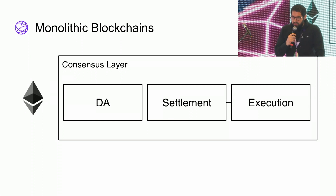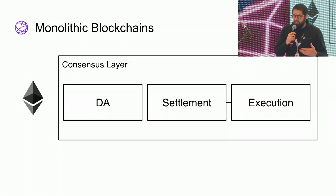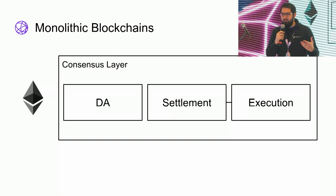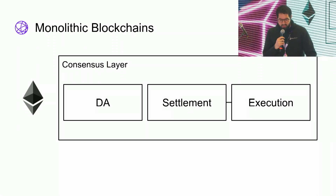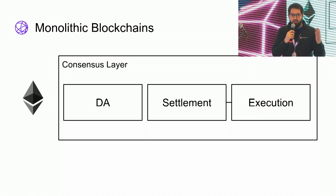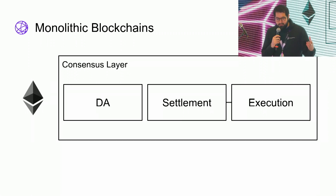How does a monolithic blockchain look? Traditional blockchains from the past 10-12 years have all been monolithic. In a monolithic blockchain, the base consensus layer does all of data availability, settlement, and execution — and usually settlement and execution are tied together.